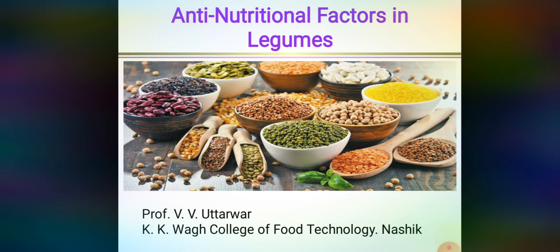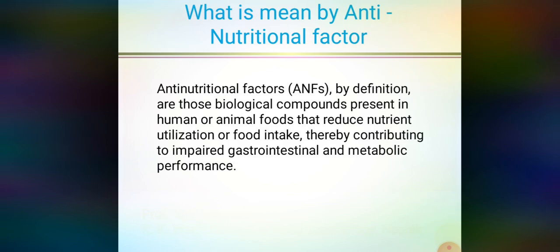We'll go through the remaining anti-nutritional factors one by one. Before going to anti-nutritional factors, we'll first see what is meant by an anti-nutritional factor. The definition is: a compound present in human or animal food that reduces nutrient utilization or food intake, thereby contributing to impaired gastrointestinal and metabolic performance. In other words, there is a presence of some chemical compounds in legumes which reduce nutrient utilization or food intake.